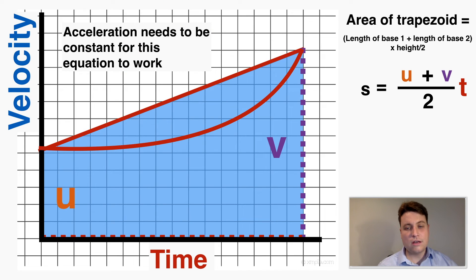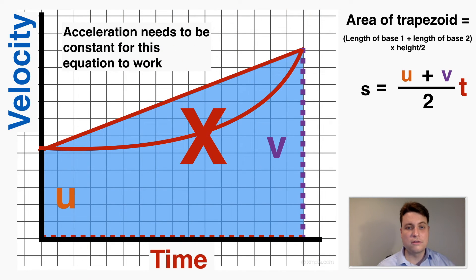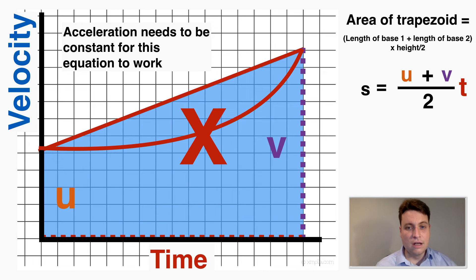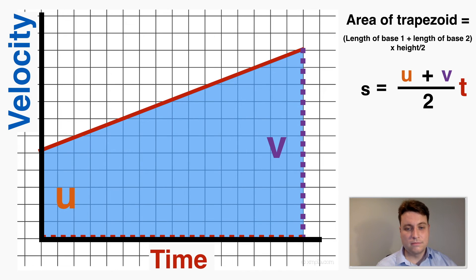This equation only works if the slope is constant — if the slope isn't constant, the shape is not a trapezoid and the formula doesn't apply. This explains why, even though acceleration doesn't appear in this equation, the acceleration must still be constant for it to work. Since the slope of a velocity-time graph equals acceleration, constant slope means constant acceleration.